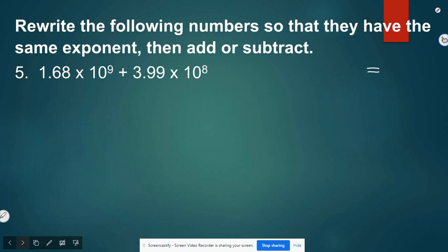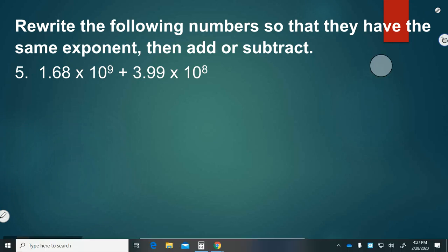All right. So now we have to rewrite the following numbers so that they have the same exponent and then add or subtract. So whenever you're doing problems like this, when your power of 10s are different, take the smaller power of 10 and rewrite it so it's the same as the bigger. And that will make it so you don't have to rewrite again later. So we need to rewrite this 10 to the 8th as 10 to the 9th. Since this is being increased by one place, our decimal has to be decreased by one place. So this is going to be 0.399 times 10 to the 9th.